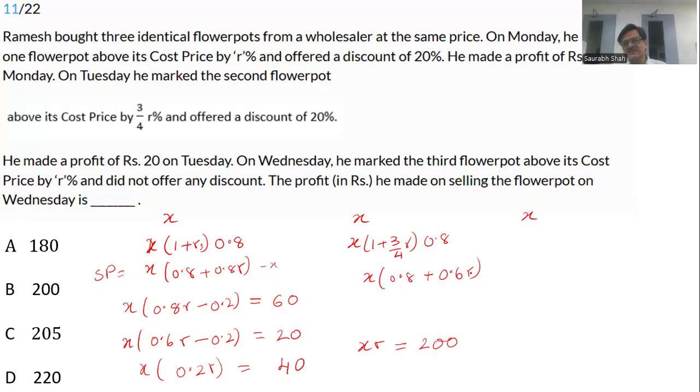This is actually your answer. But let us understand how we get this. On the third day, on Wednesday, the price is raised by r percent and no discount is given. So the selling price, the mark price becomes the selling price. X times 1 plus r is the selling price, minus x the cost price. So we have x times r. This is the profit. And that we already found is 200. So the profit is 200 rupees.